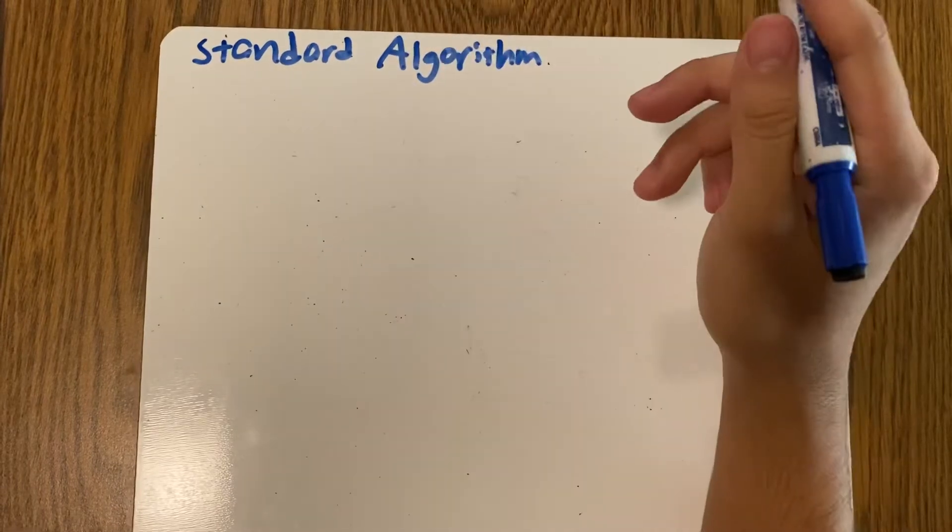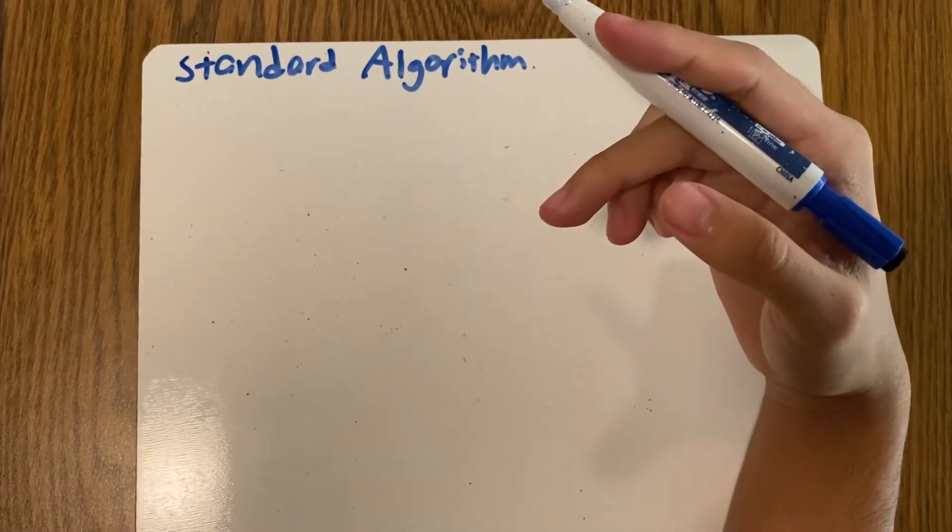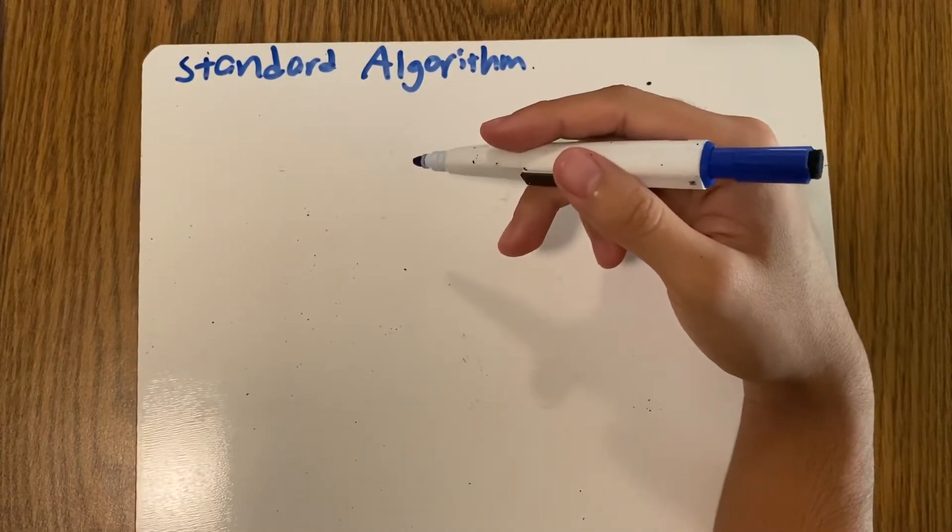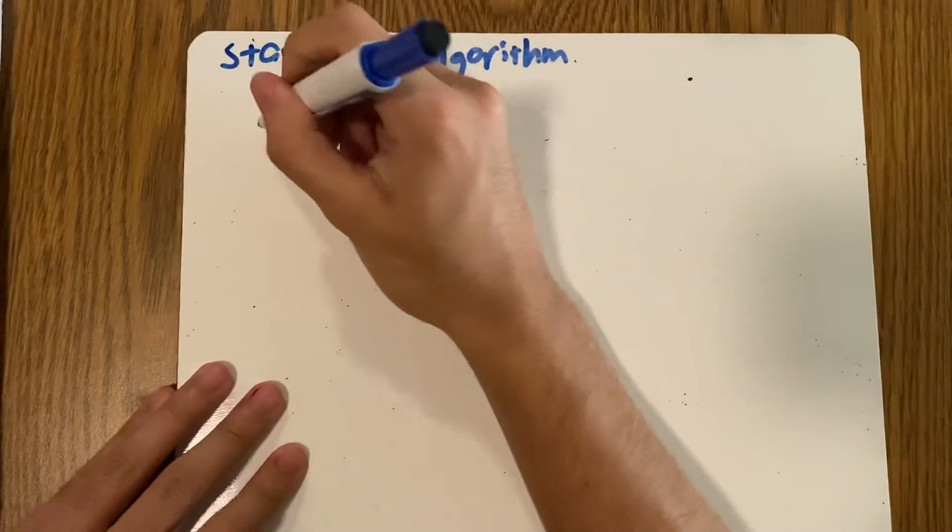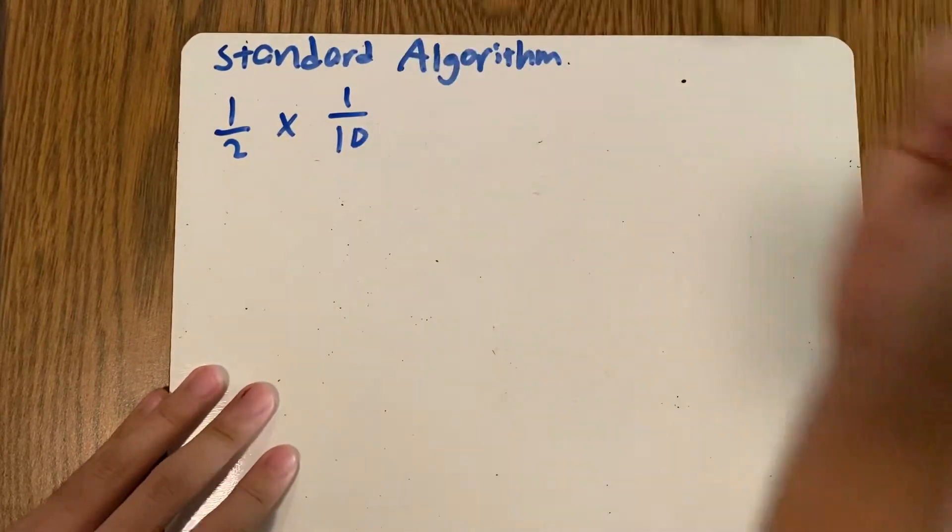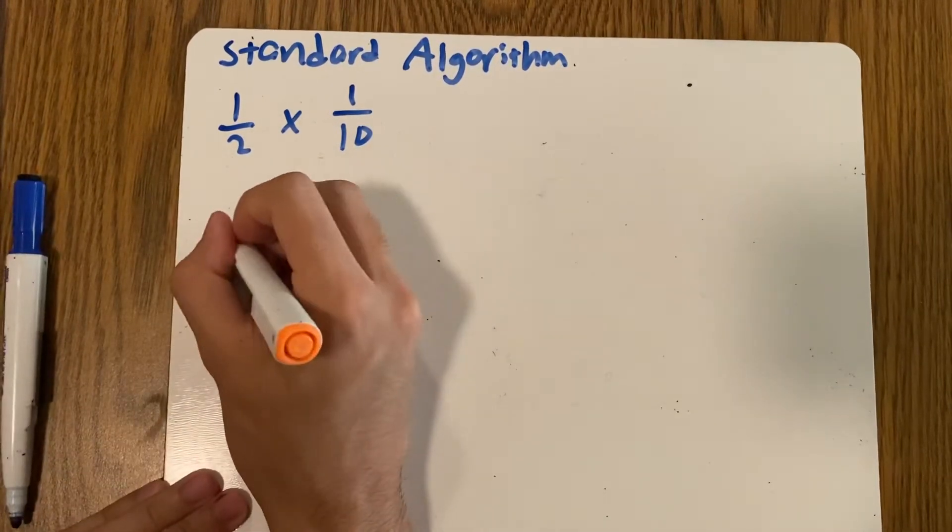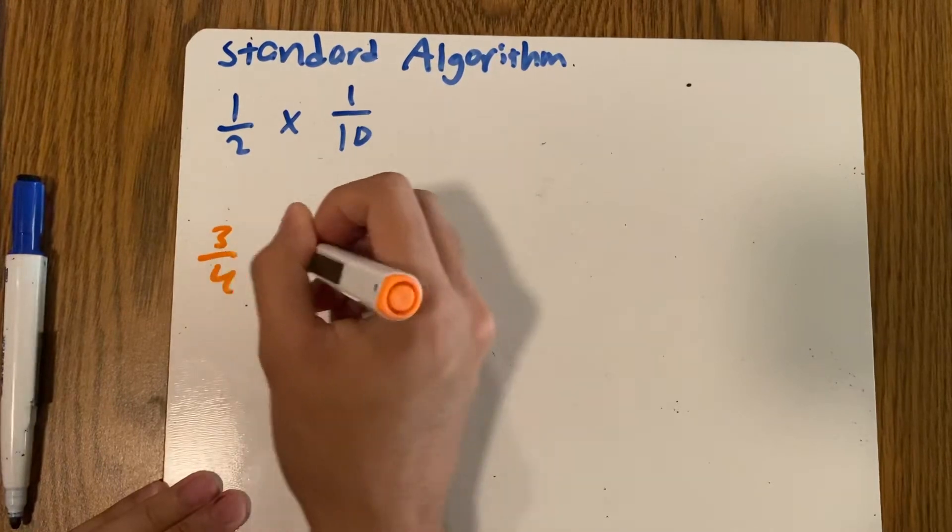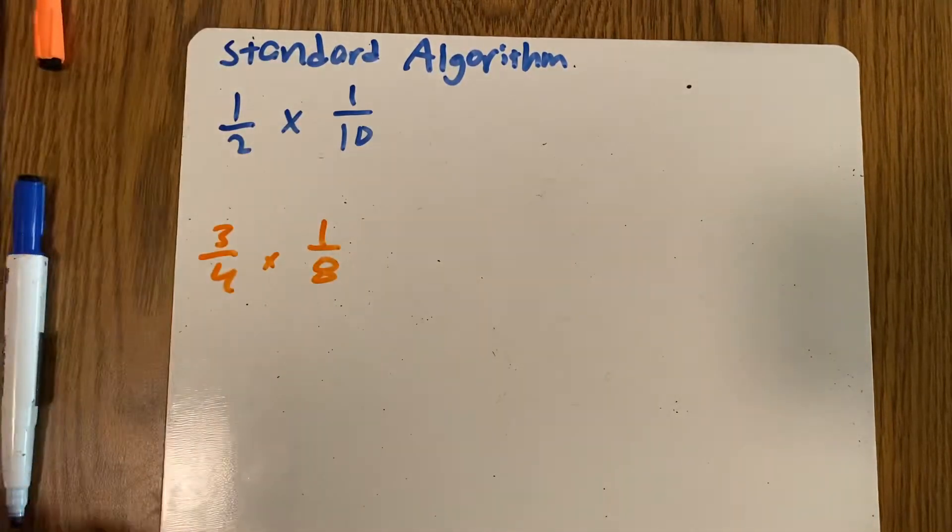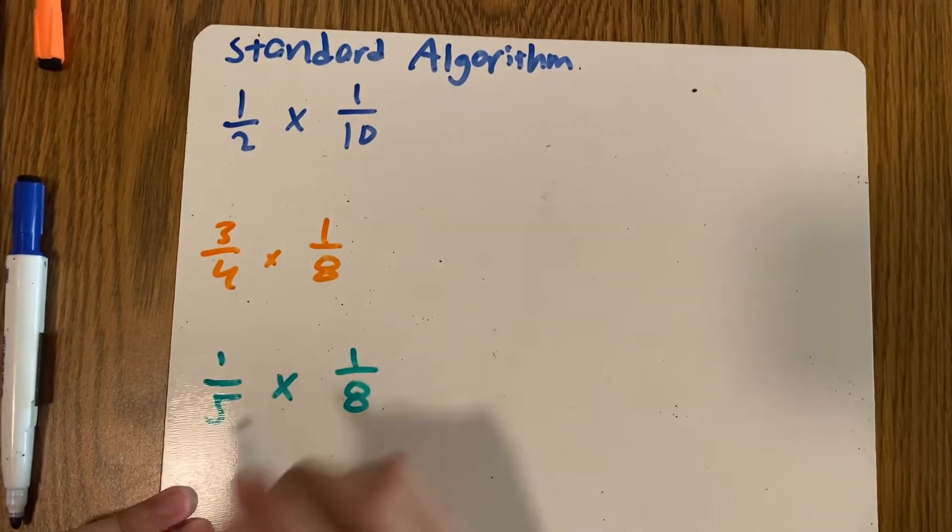Now there is another method where we can draw it, but I think I'm going to save that until tomorrow, because you will have quite a bit of science work to do today. But anyways, the standard algorithm is pretty simple and pretty straightforward. For example, I'm going to do, let's say, one over two times one over ten. And then we have another one: three over four times one over eight. And then we have another one: one over five times one over eight again.